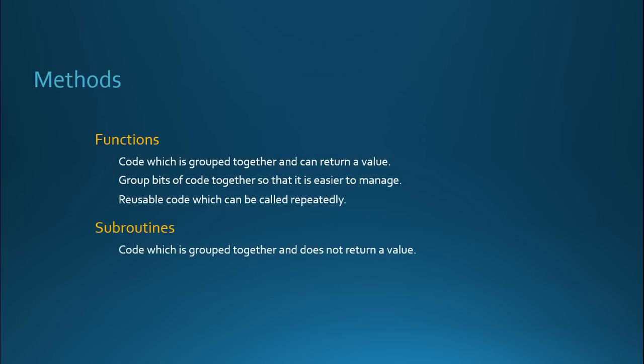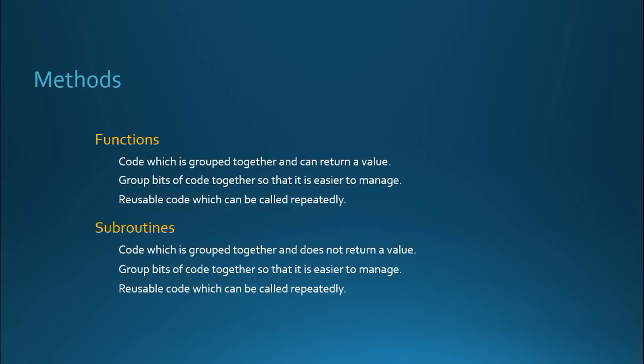Subroutines, as we've talked about before, are also code which is grouped together, but do not return a value. Subroutines do not return a value; functions can return a value, and that's primarily the biggest difference between functions and subroutines. Subroutines also group our bits of code together so that it's easier for us to manage, and of course makes our code reusable so it can be called repeatedly.